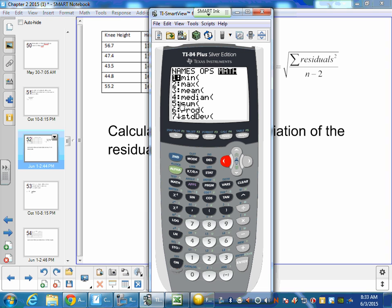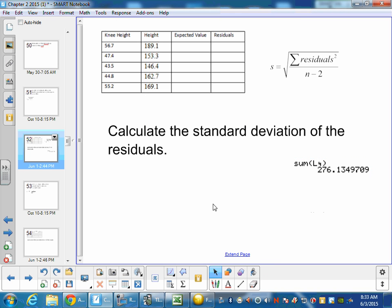So we went over to math, go down to number 5. So we're going to sum up, was it L4? And we got 276.13. Now that's the sum of all my residuals squared.